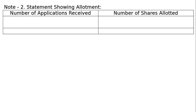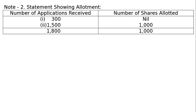Note 2: statement showing allotment — number of applications received and number of shares allotted. 300 applications: shares allotted nil. 1,500 applications: shares allotted 1,000. Total number of applications received: 1,800. Number of shares allotted: 1,000.